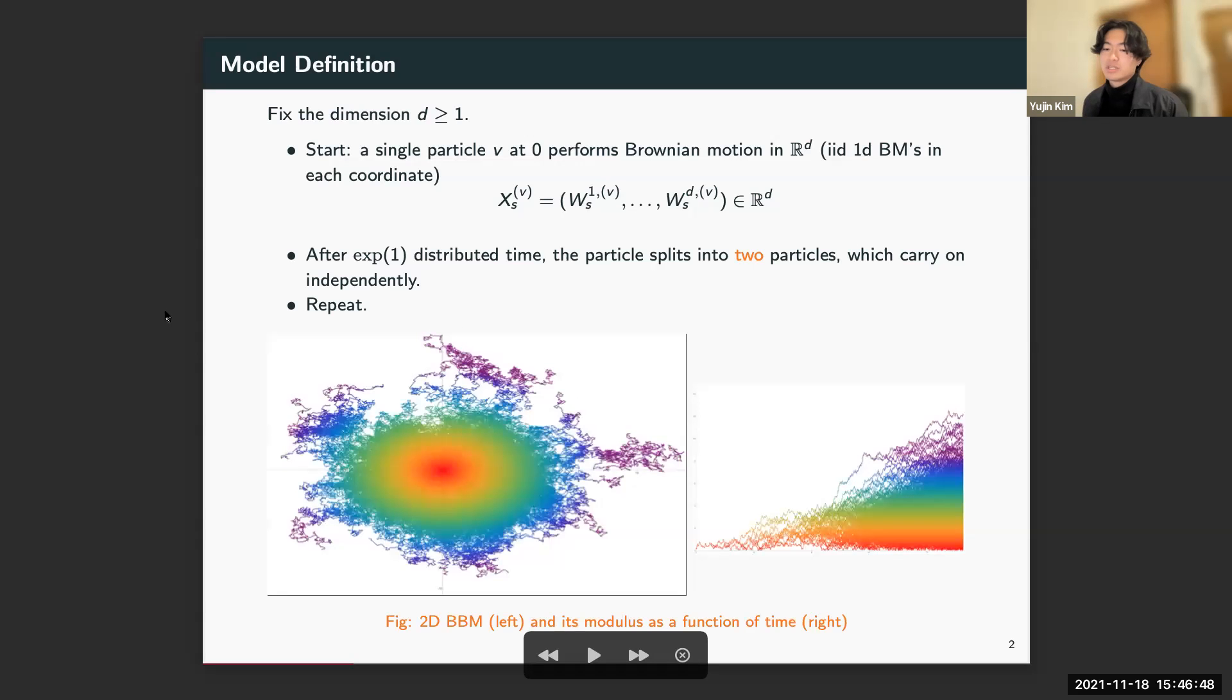Here's a simulation of 2D BBM run until the system size hits 10,000. We'll be interested in the particles with large moduli, so the colors are assigned according to moduli. On the right is a plot of the modulus of each particle on the left as a function of time.